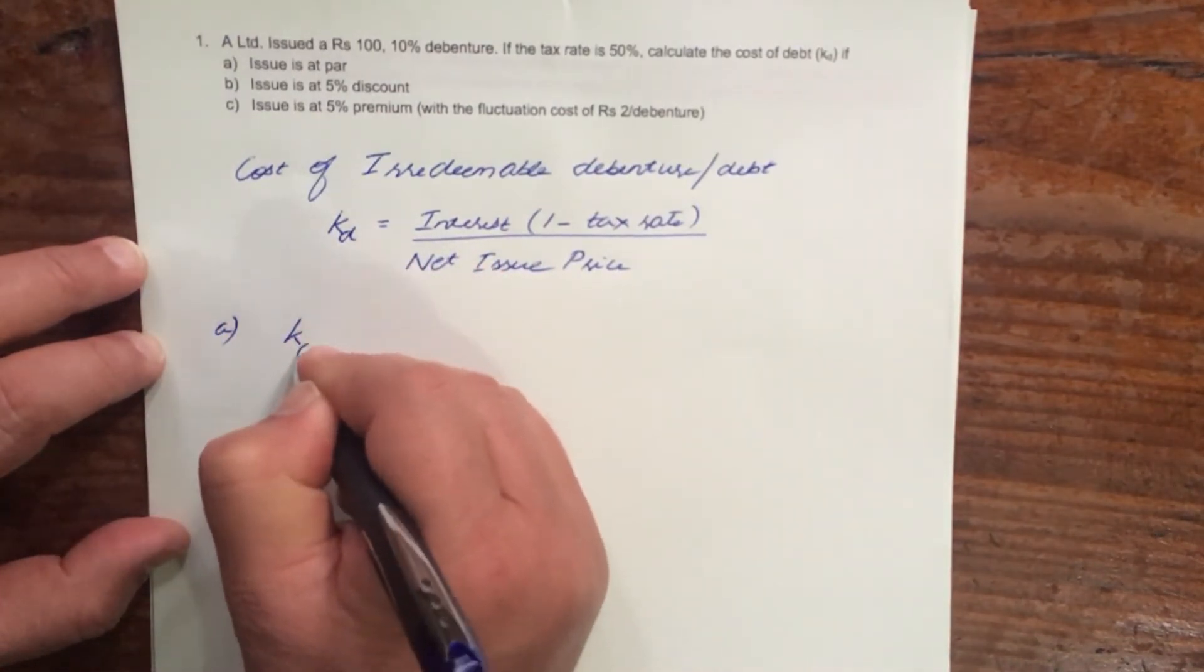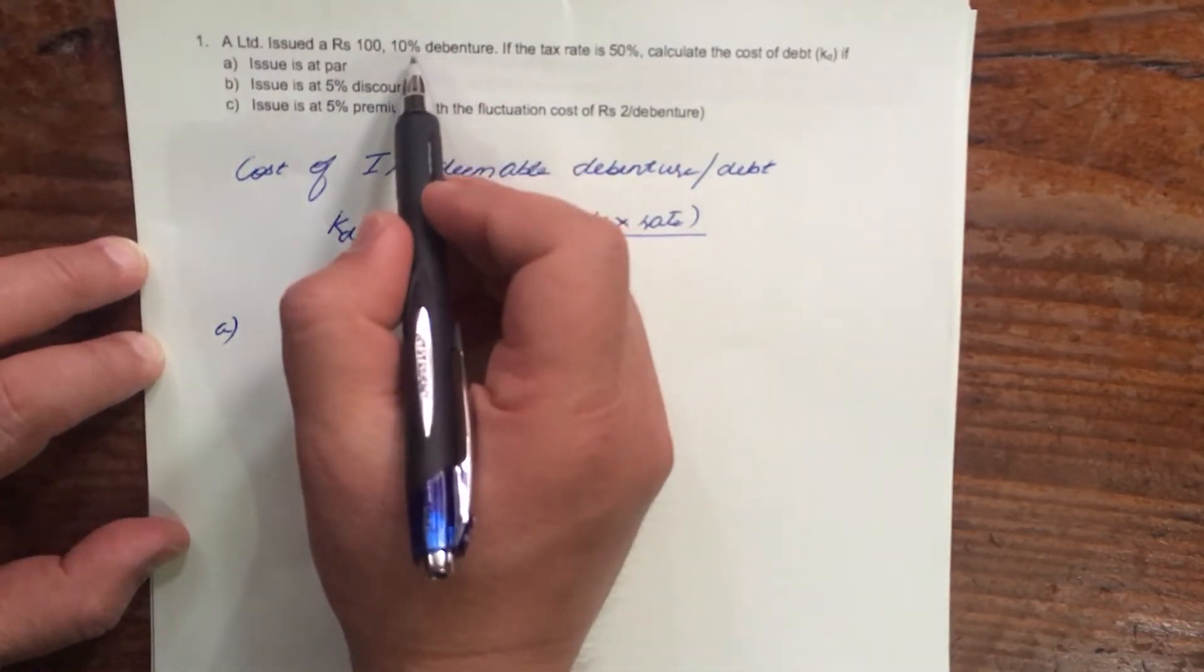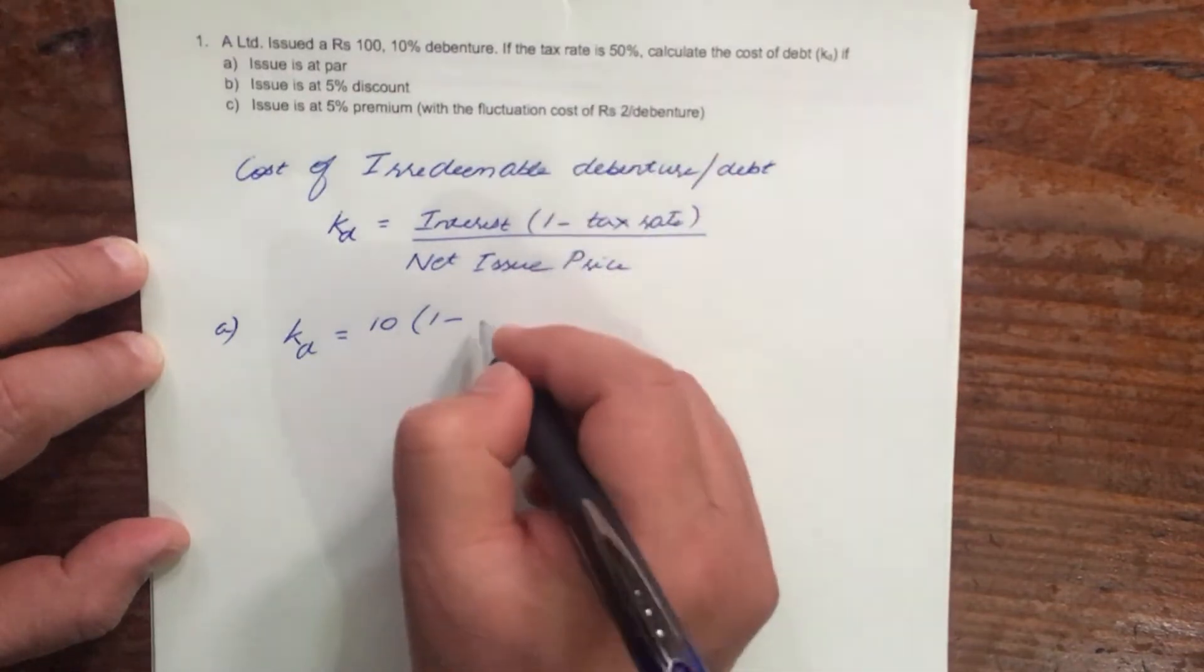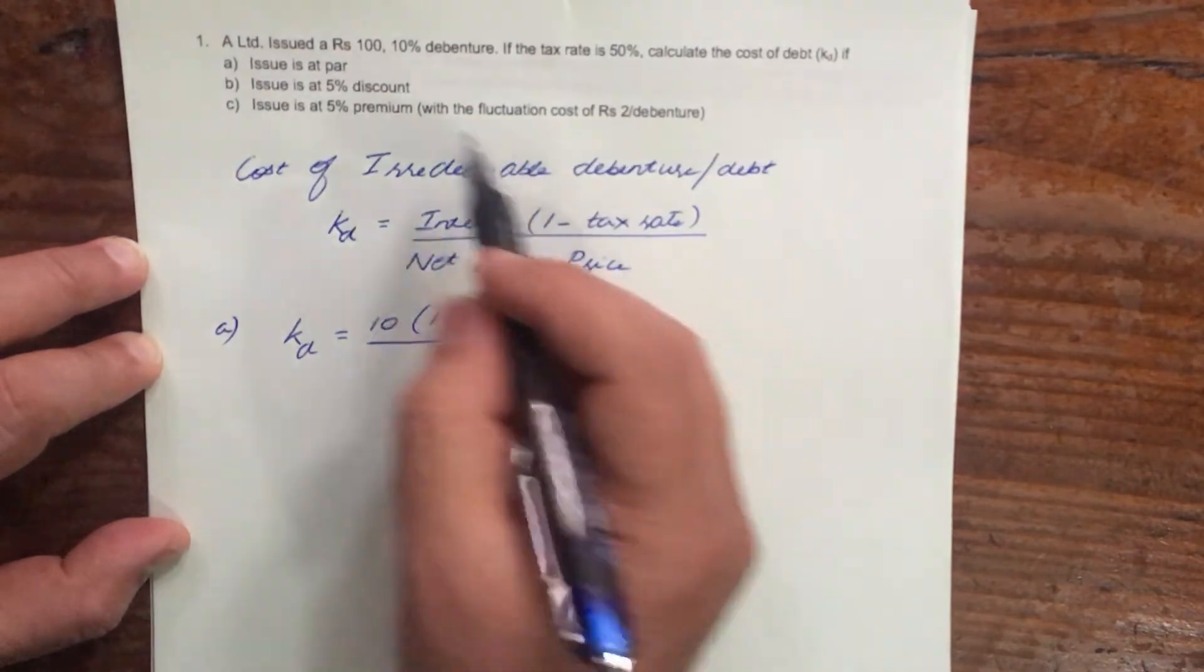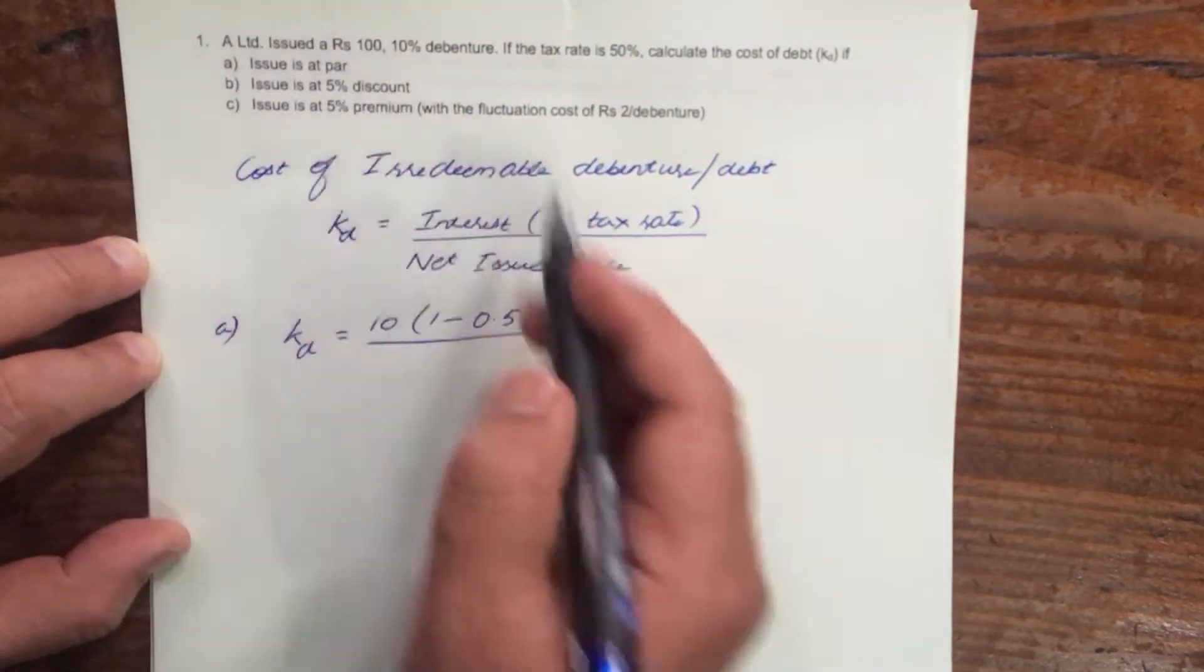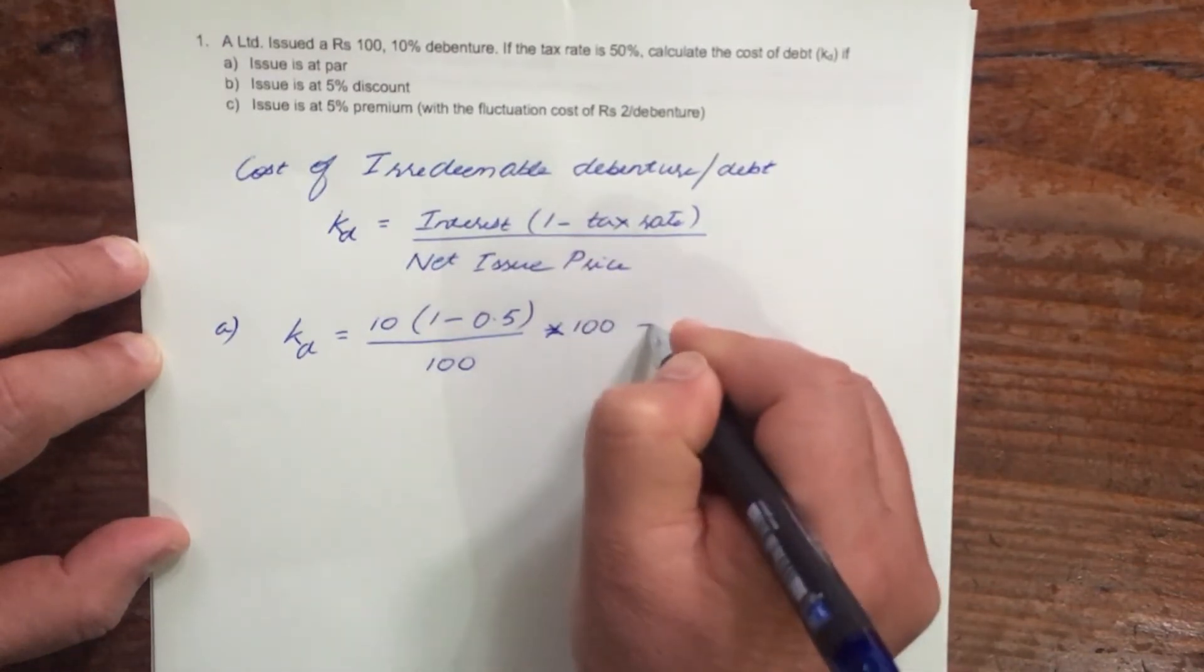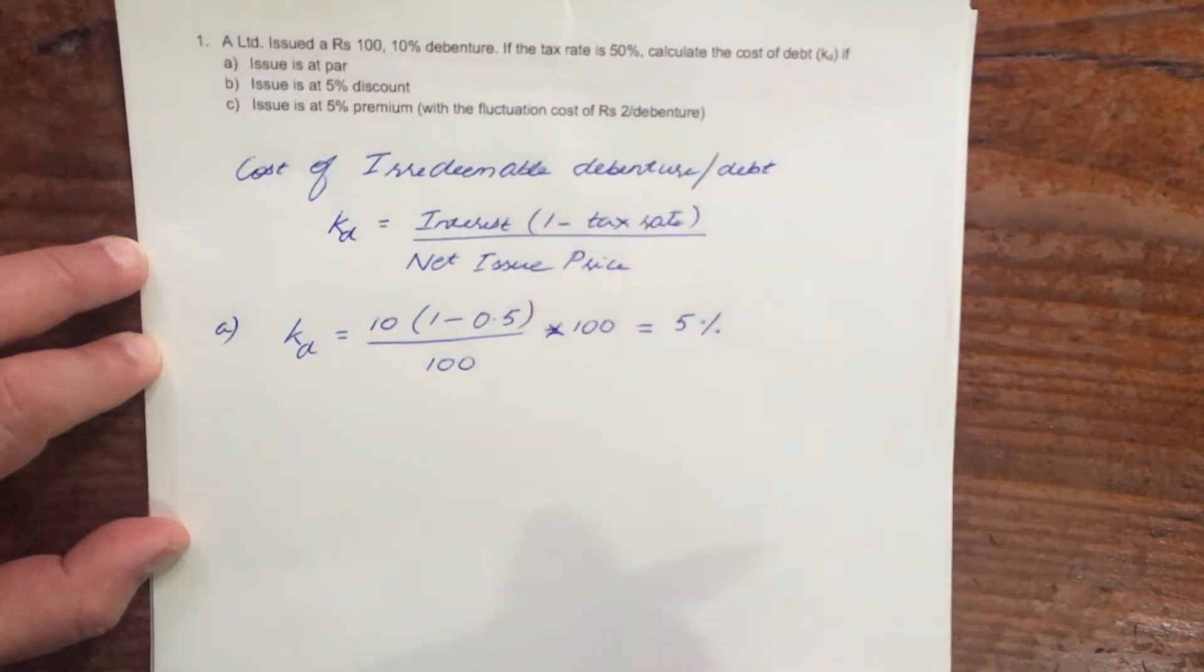So, cost of debt Kd equals - what is the interest? Interest is 10% on 100, so that is 10 rupees. Then 1 minus tax rate - the tax rate is 50%, so it is 0.5 - divided by the net issue price. Now, the issue is at par, so the net issue price will be 100. If you calculate, it will be equal to 5%.